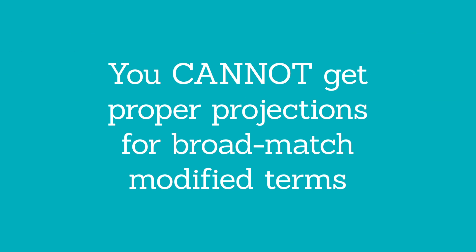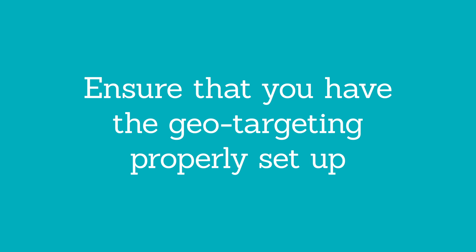Now all of this sounds great, but there are a few things you want to consider when using the Keyword Planner tool. First is that you cannot get proper projections for broad match modified terms. Google just does not have the capability to find out what the projections would be in terms of spend, volume, et cetera, within the tool. One workaround is to add the term in as just a broad keyword and then say, 'Here's how much it is projecting, but we expect it's going to be around half that volume because you have the broad match modified version of that keyword.'